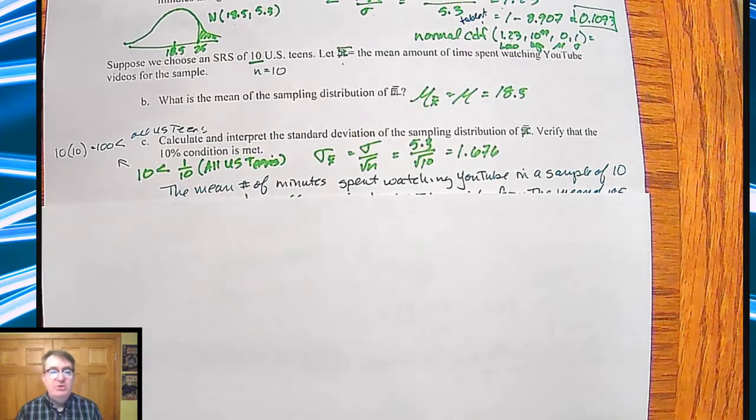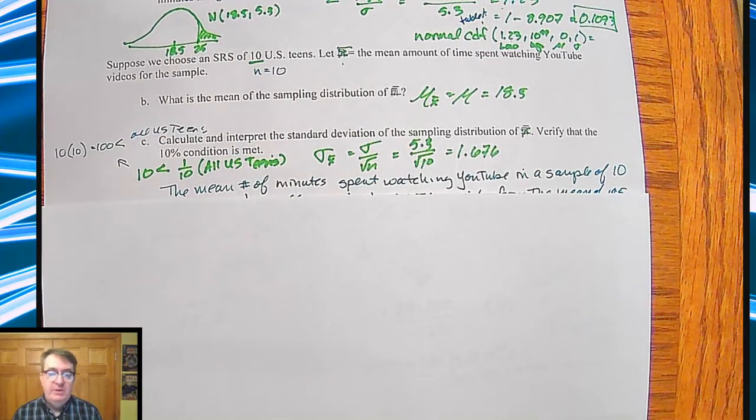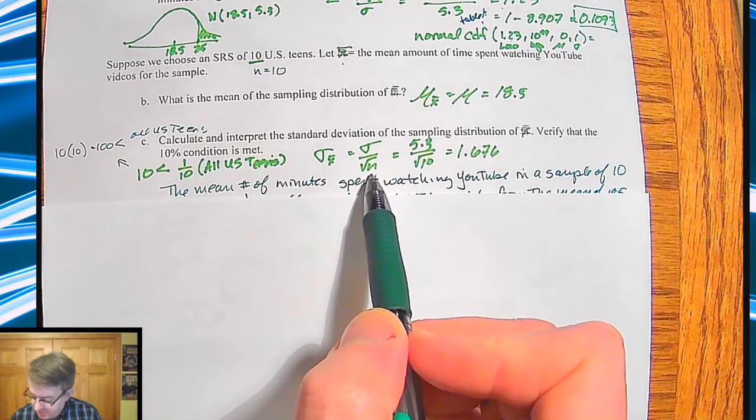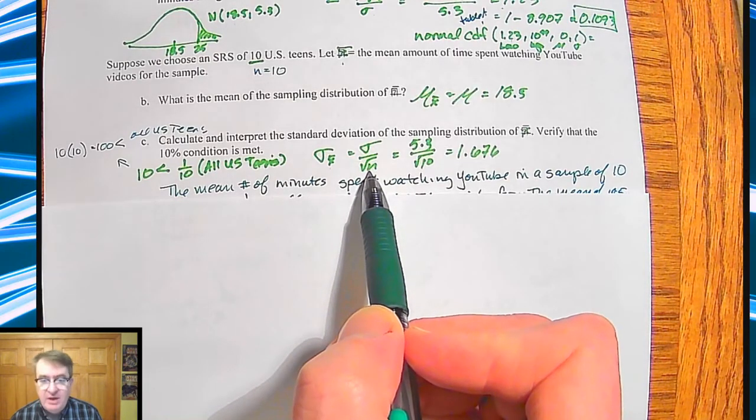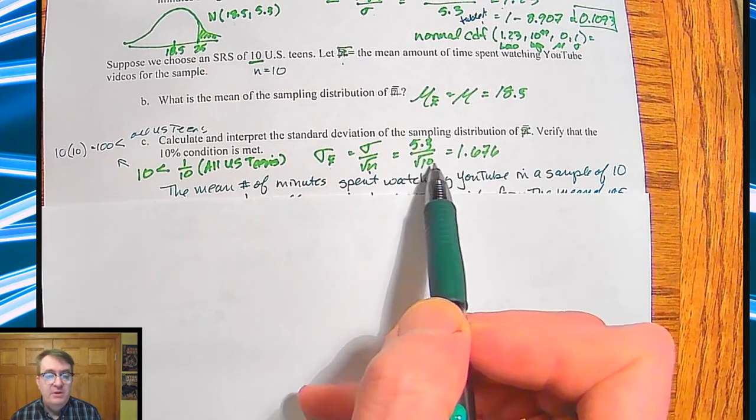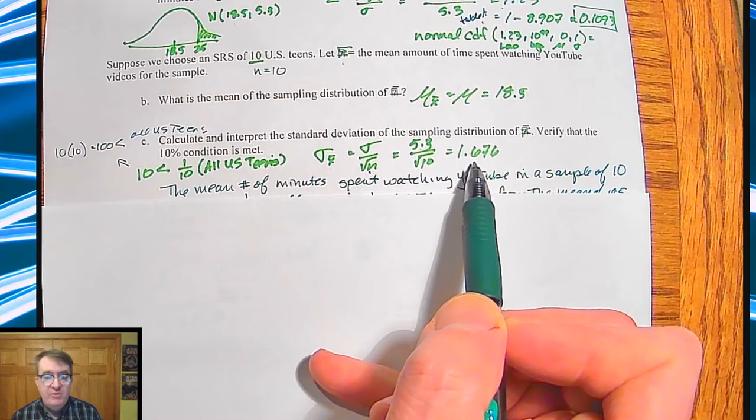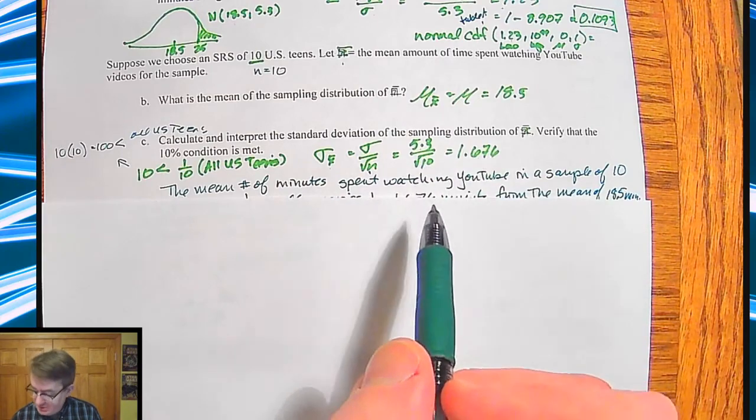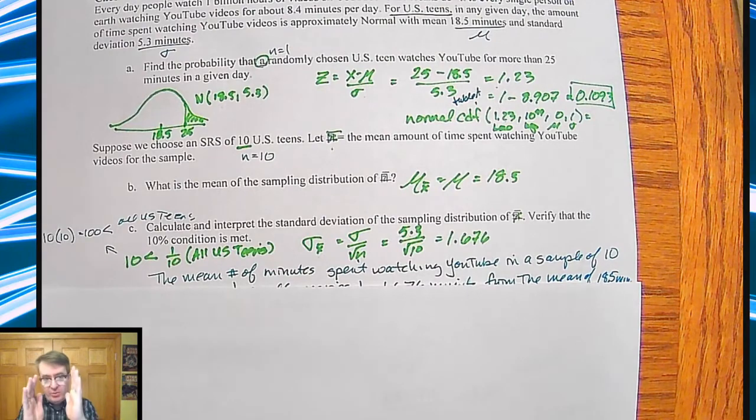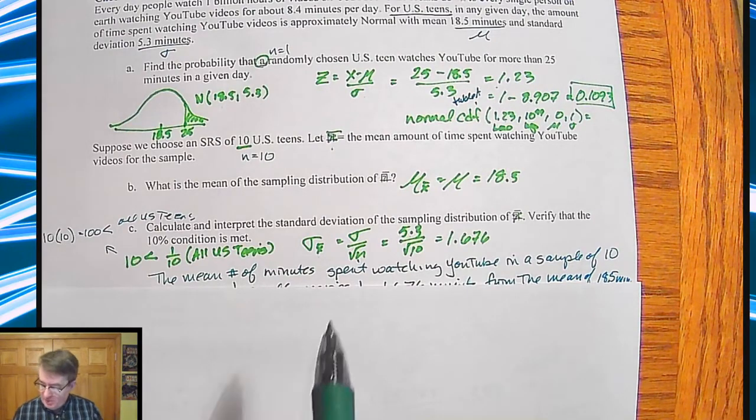So if that's an easier way for you to do it, that's okay. So sigma of X bar is equal to sigma over square root of n. So that means I'm going to take this standard deviation of 5.3 divided by the square root of 10. And that's going to give me a new standard deviation of 1.676. Notice, when you compare it to the original, we've already shrunk in a whole bunch.